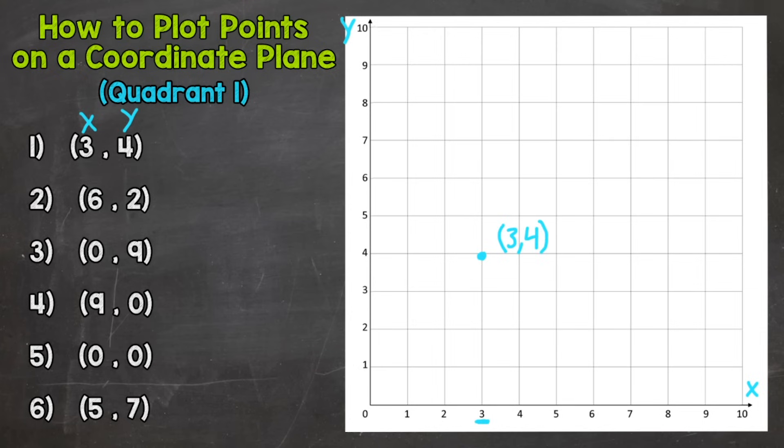So let's go to number two. There, (6, 2). So again that 6 is our x-coordinate and the 2 is our y. So we would go over 6 here and then up 2 and plot a point.